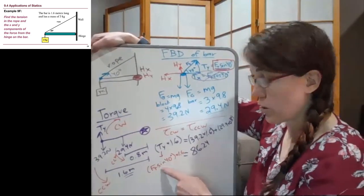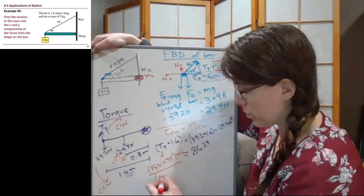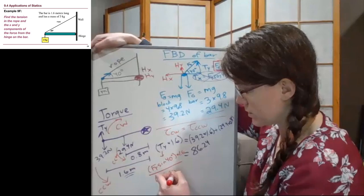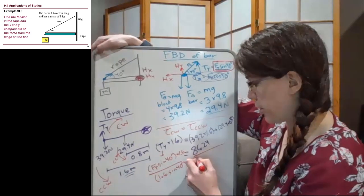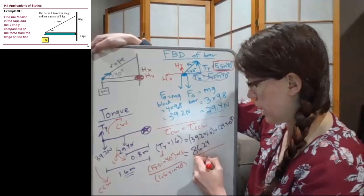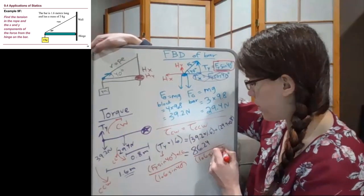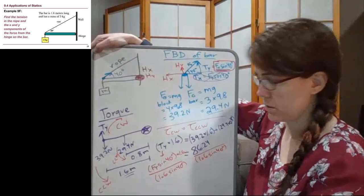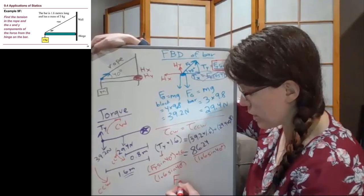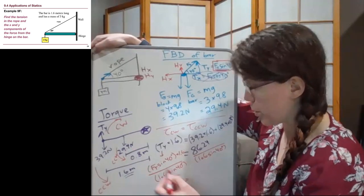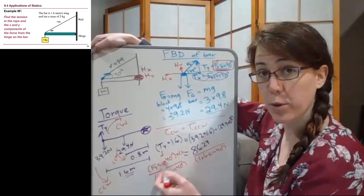So to solve for the tension, we need to divide both sides not just by the 1.6, but also by sine 40 degrees. And if we're dividing by both things, we can either divide one, and then the next step is divide the other, or we can divide them both as long as we use parentheses.